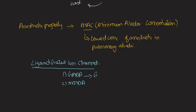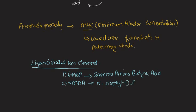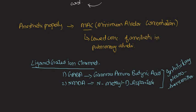GABA stands for Gamma-Amino Butyric Acid, and NMDA stands for N-Methyl D-Aspartate. These are inhibitory neurotransmitters in the CNS. So to summarize, you have to consider MAC and then GABA and NMDA receptors as the basic concepts of general anaesthetic pharmacology.